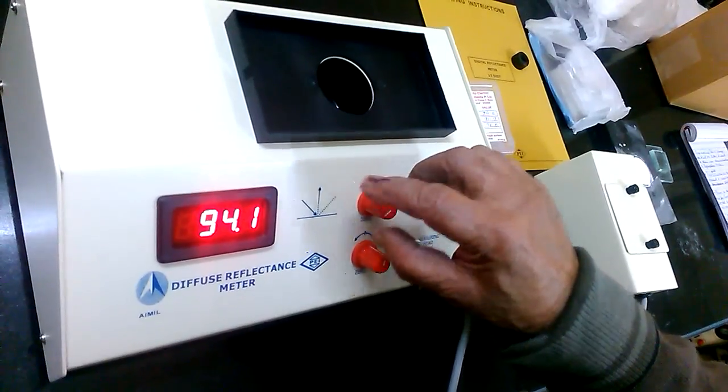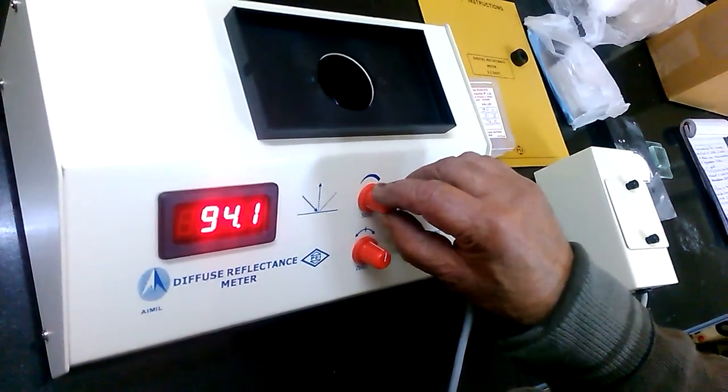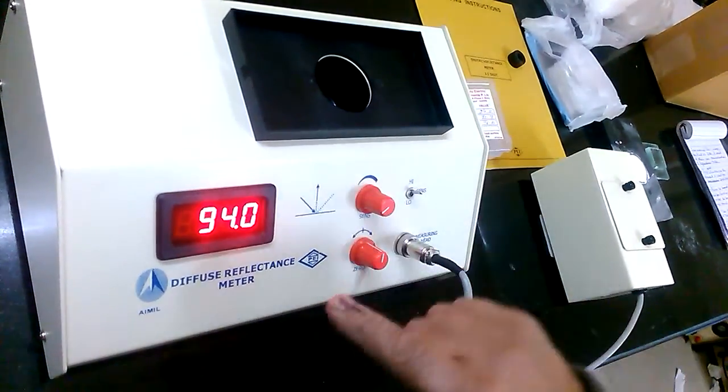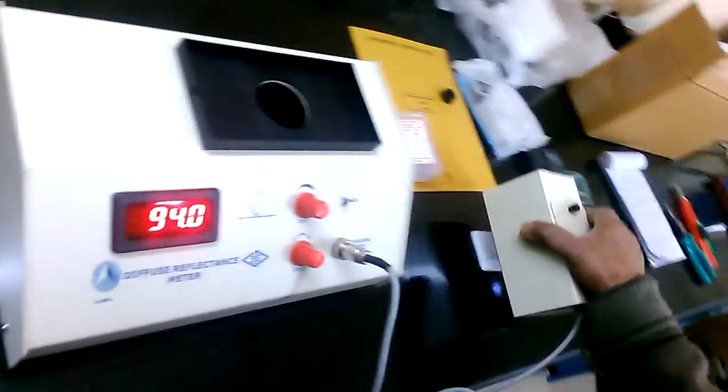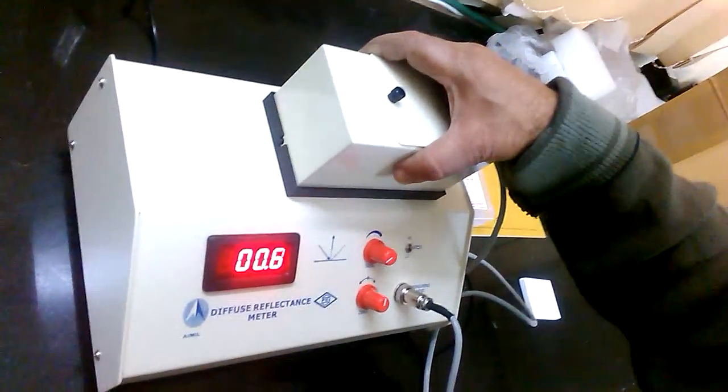Now, I have adjusted 94 value with the green filter. We are measuring reflectance with the green filter. Place again the head on the zero cavity.